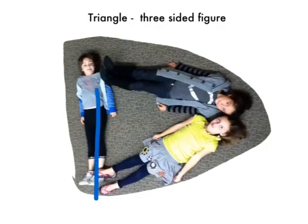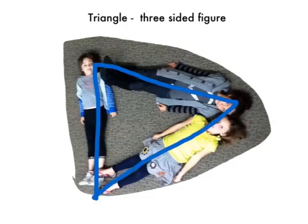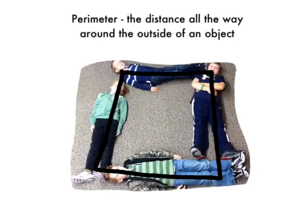A triangle is a figure with three sides and three corners. Perimeter is the distance all the way around the outside of an object.